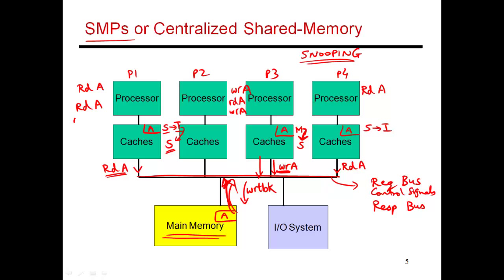Now let's assume that P1 wants to do a write of A. It looks at its cache and says yes, I do have a cache hit — a valid copy of A. But I don't have the permissions to do a write, because this block is in shared state, not modified state. So before I can perform my write, I have to make sure that I have the only exclusive copy of A, and everybody else has to invalidate their cache copy.